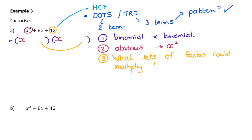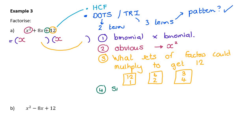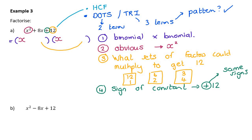So what set of factors could multiply to get 12? There are three options: 12 times 1, 6 times 2, or 3 times 4. Now, I go and look at the sign of my constant. The constant is positive 12. If it's positive, the only way to multiply together to give a positive is if you have the same signs — so either positive times positive or negative times negative. Because I need positive 8 in the middle, I know both signs must be plus. You should always be able to fill in your signs before you even think about which set of numbers to use.